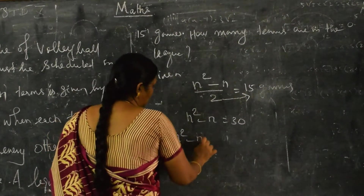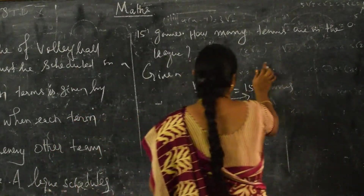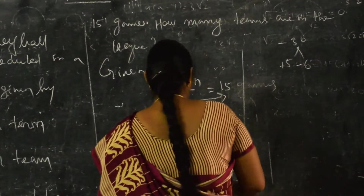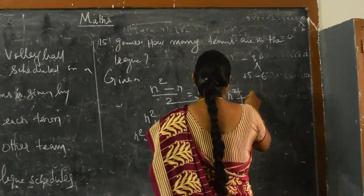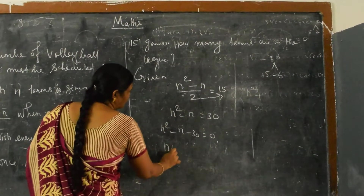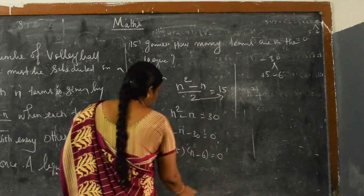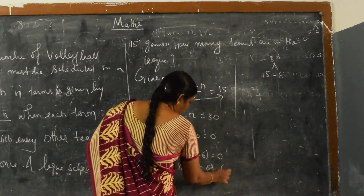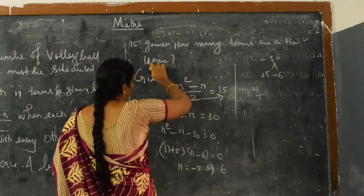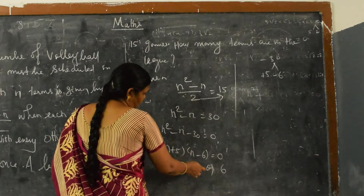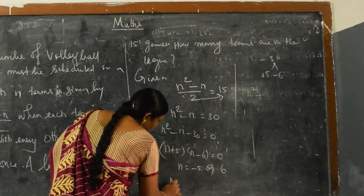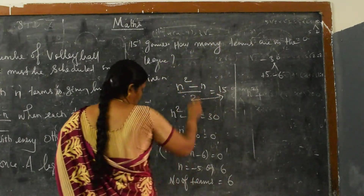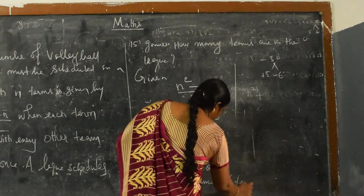Bringing 30 to the left: n² - n - 30 = 0. Split 30 as 5 and 6 (5 × 6 = 30); put minus on the greater: (n + 5)(n - 6) = 0. So n = -5 or n = 6. Since the number of teams cannot be negative, n = -5 is not possible. Therefore the number of teams is 6. There are 6 teams in the league.